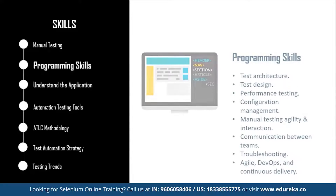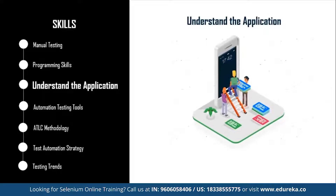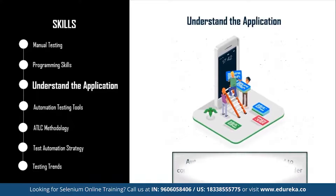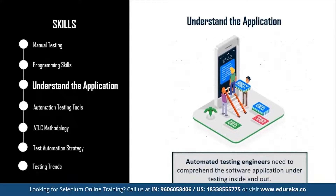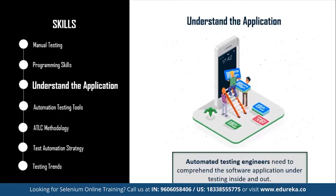Next, you need to understand the application. Common application details every automation tester must know include which programming languages were used to develop the application, on what platform it is built, which databases are involved, whether there are web services or APIs connected to different parts of the system, and many more such questions. These points may vary based on the complexity of the application, so make sure you are completely thorough with the application you are going to test.